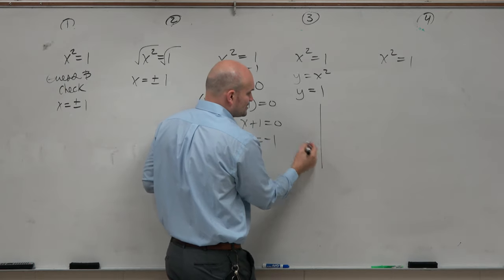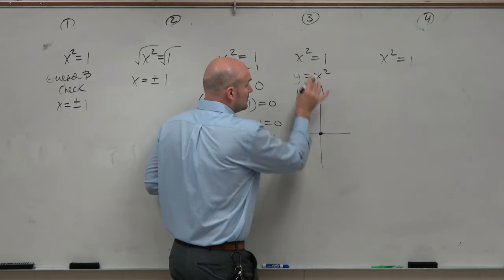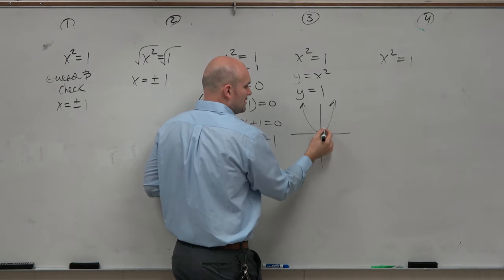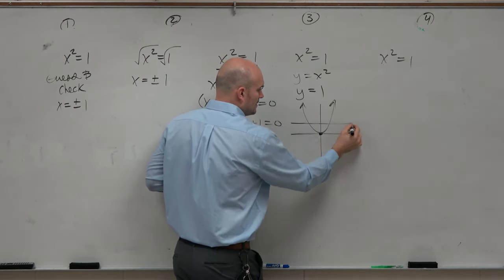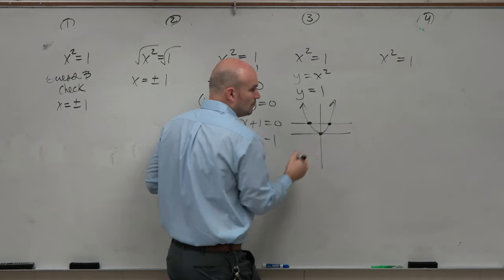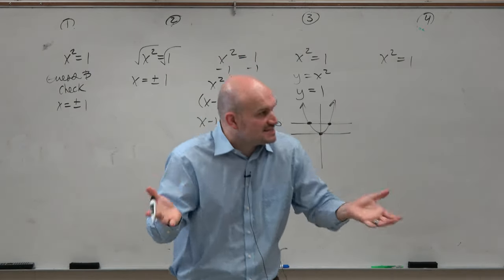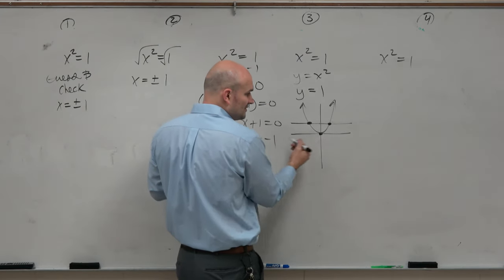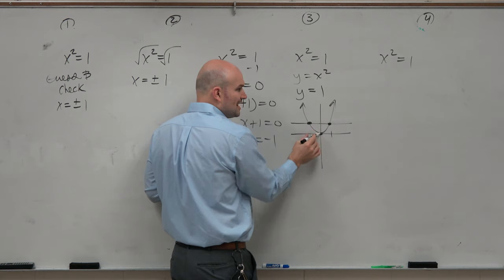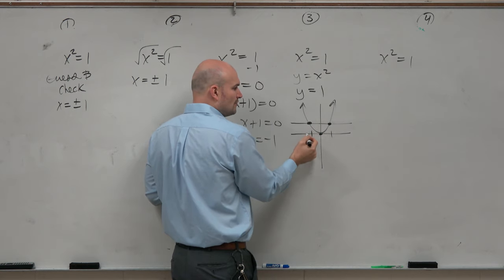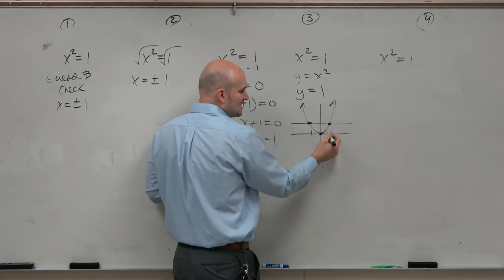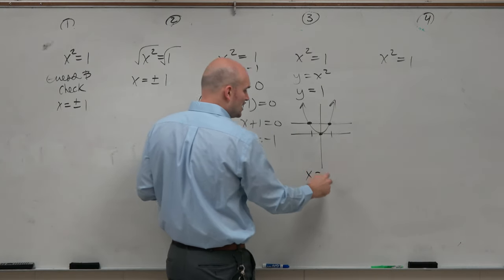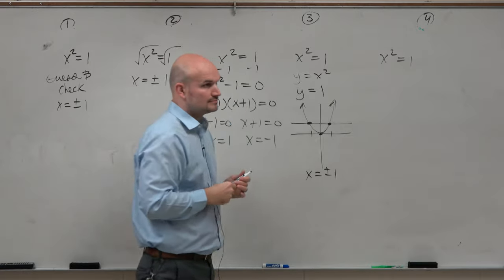Now knowing what this graph looks like, y equals x squared, we know looks like this. And then y equals 1 is over here. So now we just need to figure out where are those intersection points, right? Based on systems of equations, those are the solutions, right? And thankfully, this is not very difficult. We know that the quadratic goes over 1, up 1, negative over 1, up 1. And this is obviously at 1. And therefore, you can see that the x values for where these solutions are are plus or minus 1.